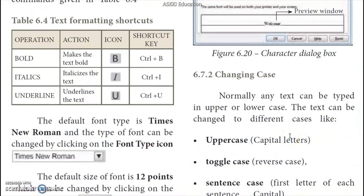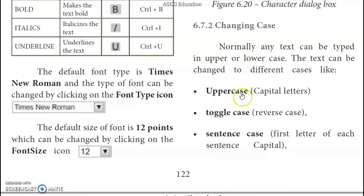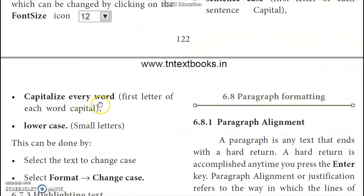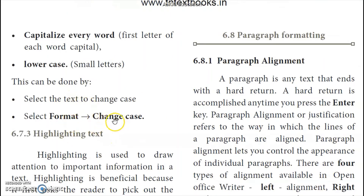If we look at the case options: we can type in lower case, upper case, or reverse case — toggle case. Sentence case means the first letter of the first word is a capital. Title case means the first letter of every word is capital, as in titles. We also have the complete lower case option. These case options are available in Format > Change Case.